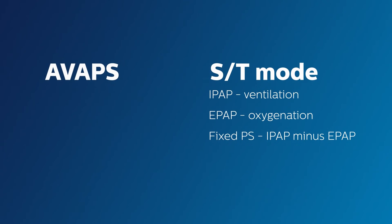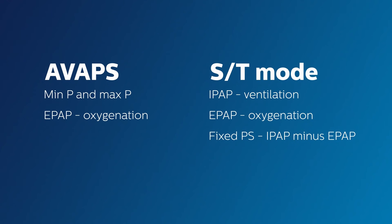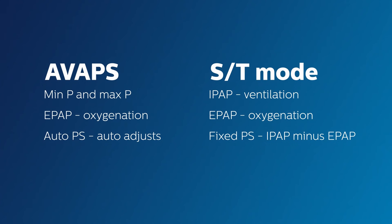In AVAPS, certain features are added. You still have the one EPAP control like in the ST mode. Rather than having one fixed IPAP setting, you now have the ability to set a range for your IPAP — a minimum and maximum IPAP setting. The IPAP can change by itself within the minimum and maximum range. Because the IPAP can change within the range, the pressure support is no longer fixed. It changes as the IPAP changes within the minimum and maximum range, based on a new setting added: tidal volume.